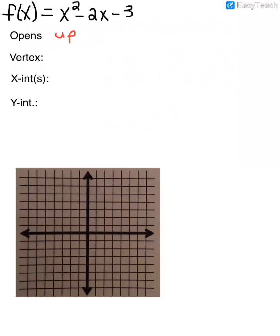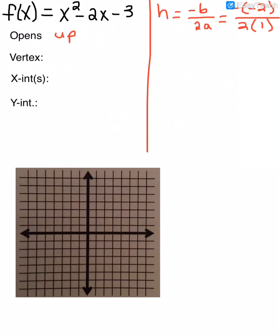Now we need to determine the vertex of the parabola. To find h, we use negative b divided by 2a. In this function, our b is negative 2, so we would get negative negative 2, divided by 2 times a, which is 1. That gives me negative negative 2, which is 2, divided by 2 times 1, which is 2. And that would be 1 for my h-coordinate in my vertex.